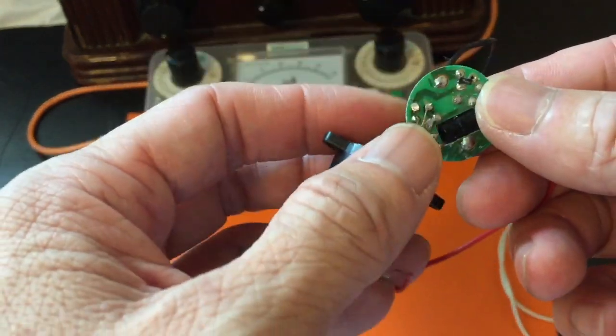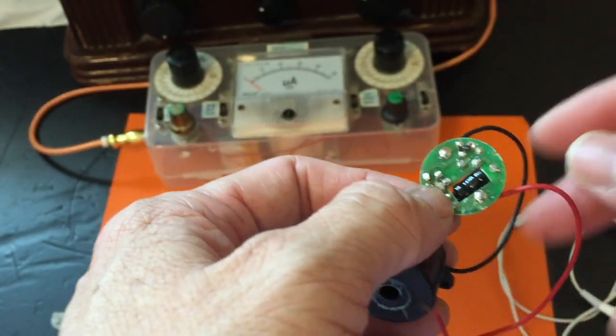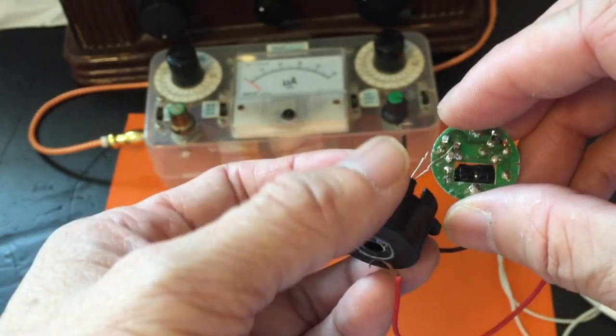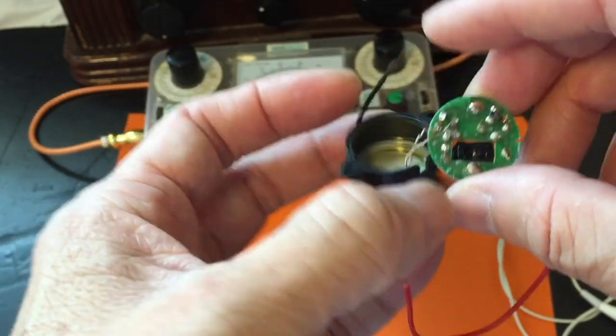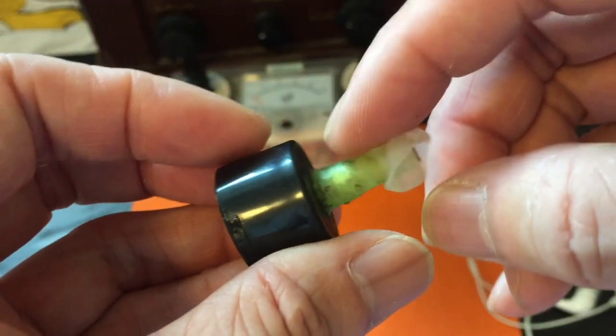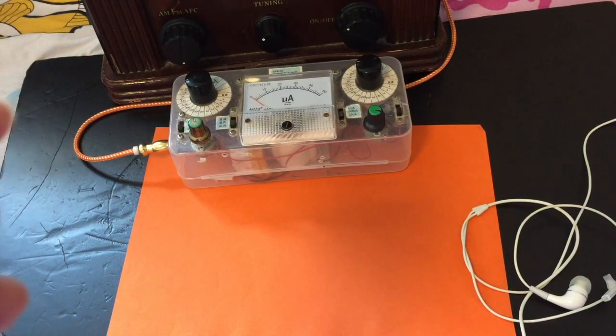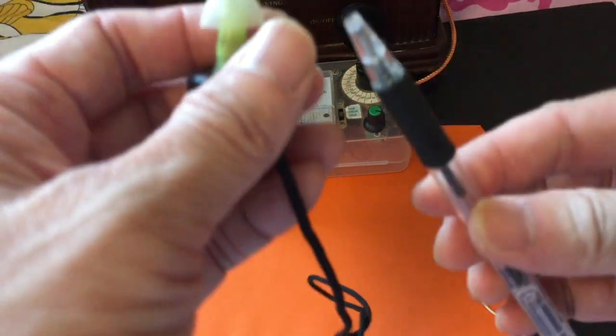Let's get rid of the components and solder the black and white wire directly onto the circuit board here and close the back with a cover.